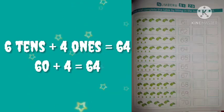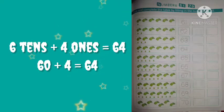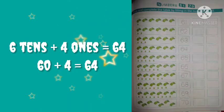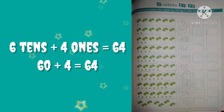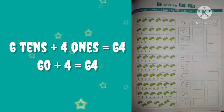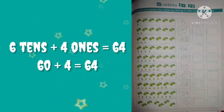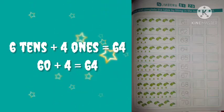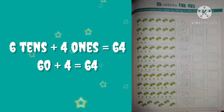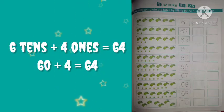In the next box, here are 6 tens and 1, 2, 3, 4 — 4 ones. 60 plus 4 is equal to 64.